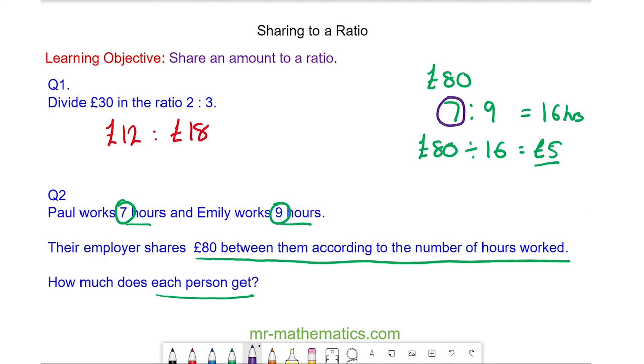So Paul, who works seven hours, will earn £5 multiplied by seven, which is £35. And Emily, who works nine hours, will earn £5 multiplied by nine, which is £45.